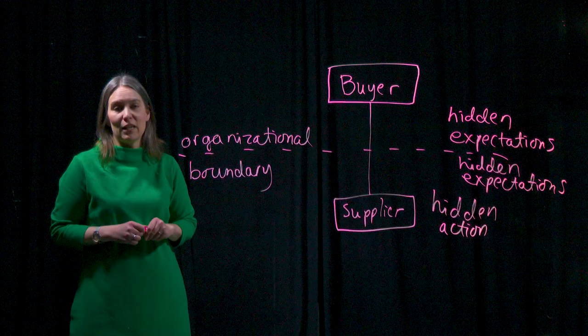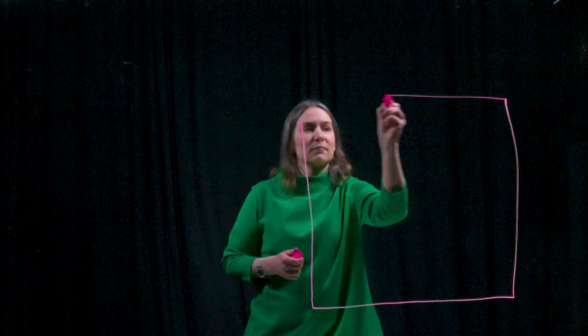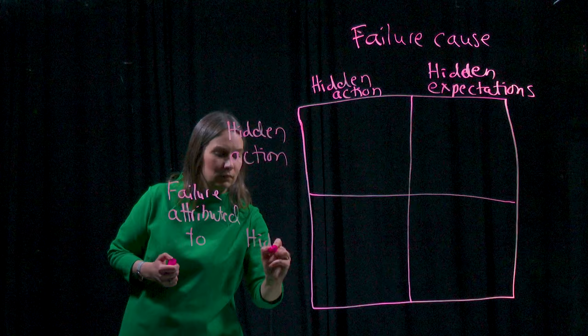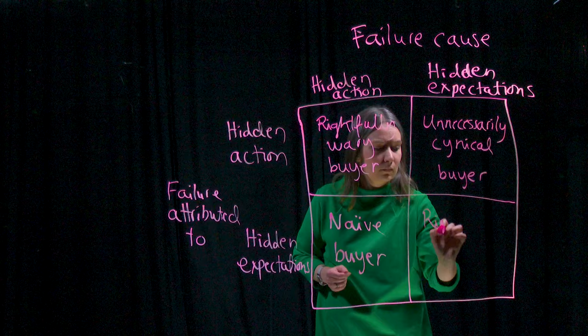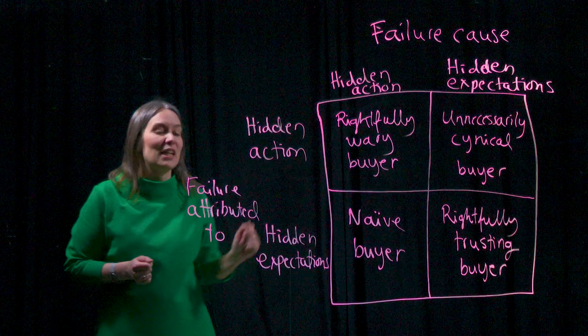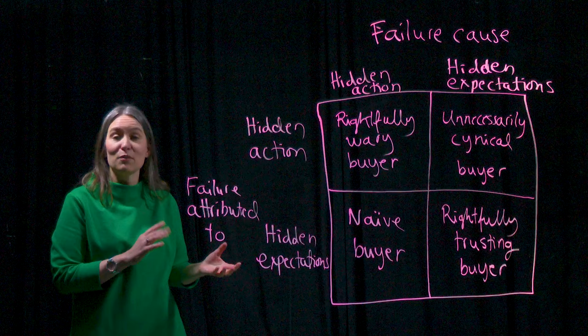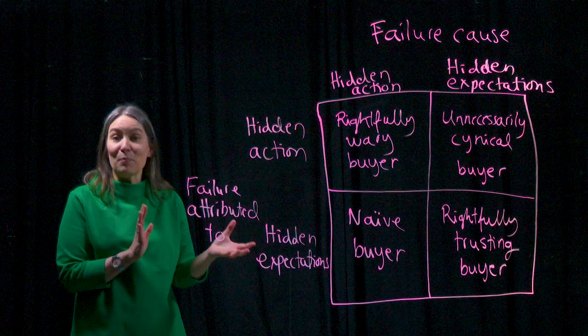Does it matter if the buyer misattributes the cause of failure — for example, blaming the supplier when in fact the cause was the buyer not sufficiently communicating specifications? Yes, it does matter, because misattributions of failure can have severe consequences for the future of the buyer-supplier relationship. For simplicity, let's assume two alternative causes for supply failure: hidden action and hidden expectations. The buyer can attribute the failure to either, so we may have a match or mismatch between the true cause and what gets the blame.